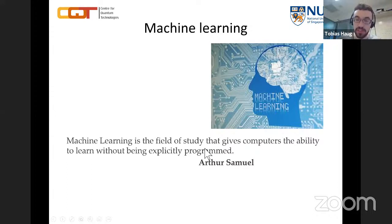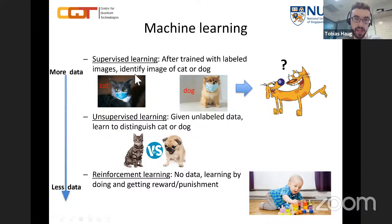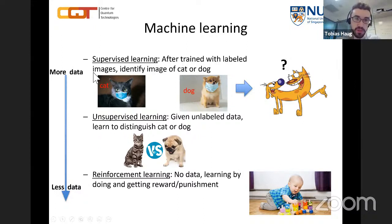People now define three main areas in machine learning. You can think about how much data you're giving to the machine to learn. I'm going to explain this going from more data to less data.